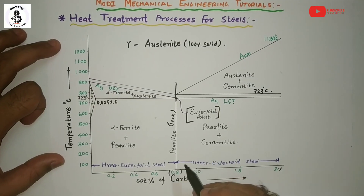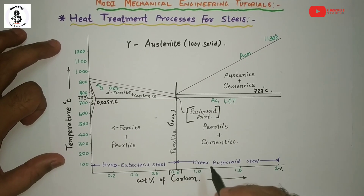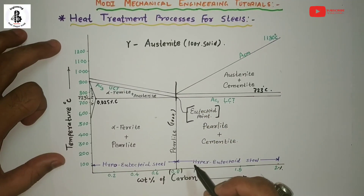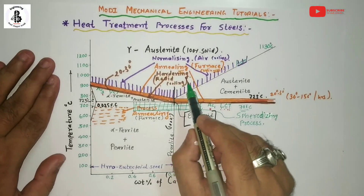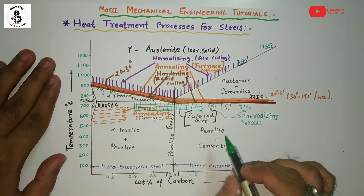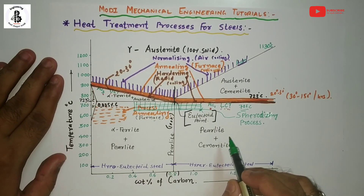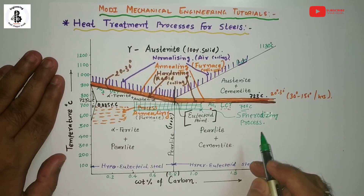Now, if you want to improve the properties of normal steels — whether hypo-eutectoid steel, eutectoid steel, or hyper-eutectoid steel — you will perform different heat treatment processes to enhance the mechanical properties. In this video I would like to explain about the tempering process, which is followed by the hardening process. If you want to learn hardening in detail, you will find a link in my description box. The basic purpose of tempering is that high carbon steel is quenched for hardening into a bath.